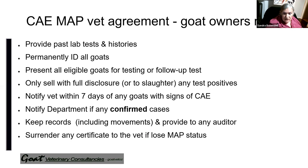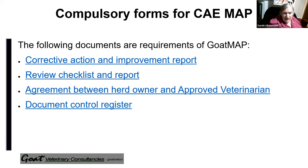In Queensland, if you don't provide records of animal movements, it's a $28,000 fine. If you leave MAP or you're expelled from MAP, you surrender any certificate to the vet. There are four compulsory forms: a corrective action and improvement report, the review checklist and report — generally done in combination with the vet — the agreement between the herd owner and the approved veterinarian, and a document control register. The document control register just says where the current documents are kept — it could be a filing cabinet, bottom drawer, or a C drive folder labelled CAE MAP, for example.